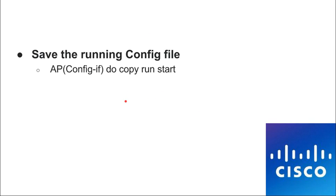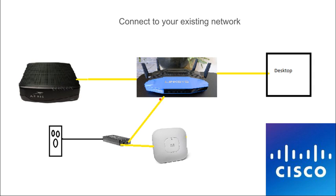Before you unplug the access point, you need to run the command to save your configuration. If you're in a sub-interface, type 'do' first; if it just says 'config' on your screen, you can type 'copy run start' directly. This saves the configuration. Last but not least, plug it into your network anywhere you want and it will work. Now I'm going to do a live tutorial configuring it very quickly.